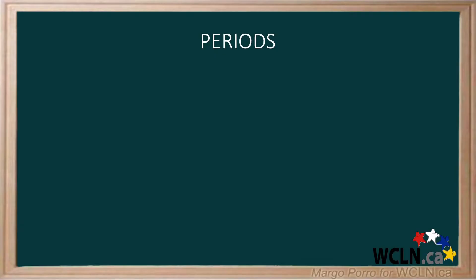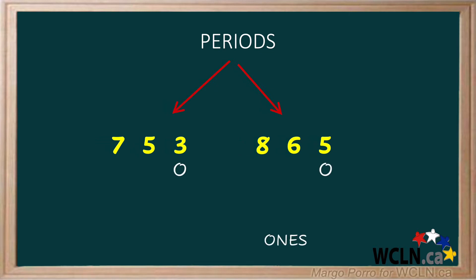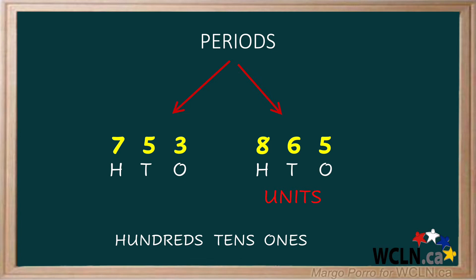Whole number digits are arranged in groups of three, called periods. Each period is made up of ones, tens, and hundreds. Each period has a name. Shown here are the units period and the thousands period.